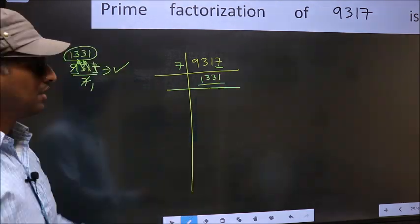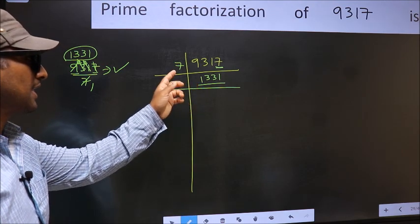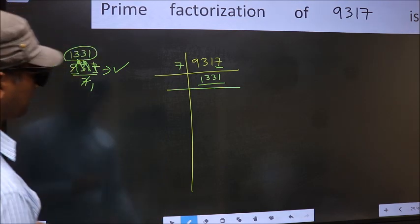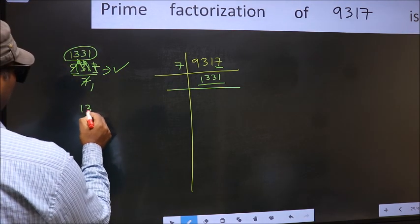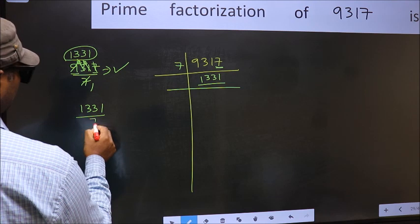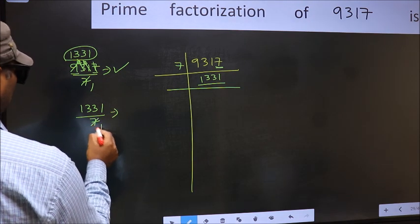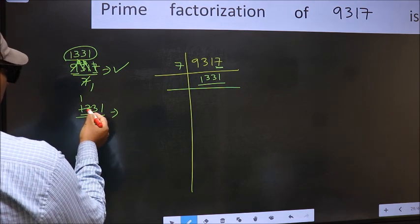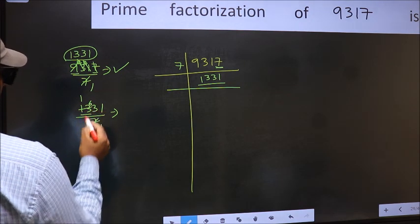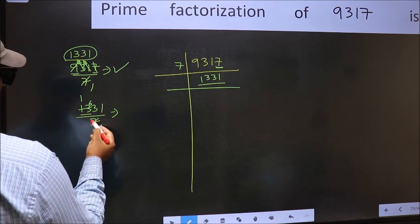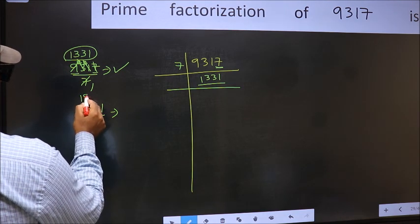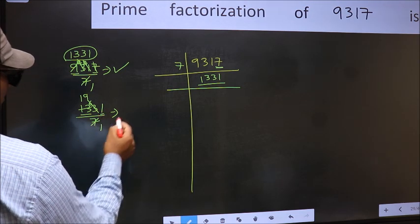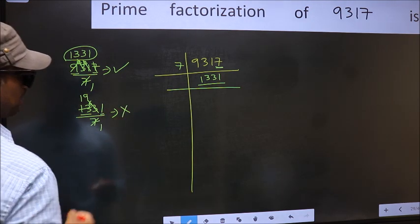Now for this number, start checking divisibility from 7 onwards. So let us check 1331 by 7. A number close to 13 in 7 table is 7 once 7. 13 minus 7, 6. 6 carried forward, 63. When do we get 63 in 7 table? 7, 9, 63. Now we have 1, we don't get 1 in 7 table, so this is not divisible by 7.